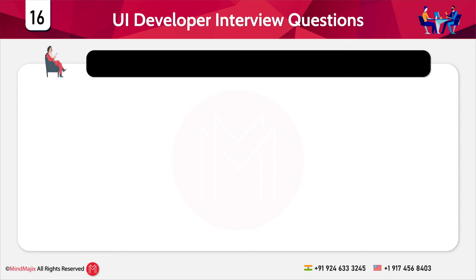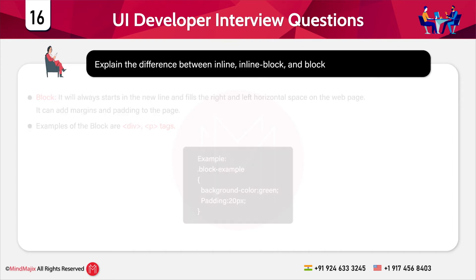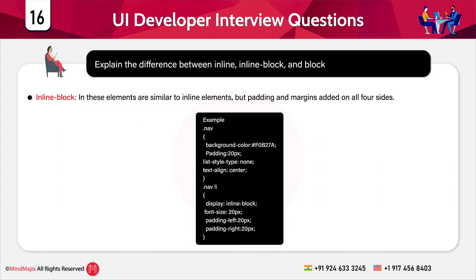The next question is: explain the difference between inline, inline-block, and block. A block element always starts on a new line and fills the horizontal space; it can also add margins and padding to the page. Inline elements do not start on a new line — they appear in the same line — and you cannot add space to the top and bottom paddings, but you can add space to the left and right. Inline-block elements are similar to inline elements, but padding and margins are added on all four sides.